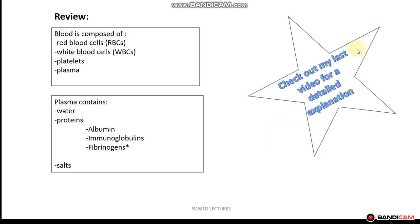Before I continue, I would like to do a quick review of blood composition as well as plasma composition. If you would like to see a more detailed explanation, please refer to my previous video — I will also provide the link below. So blood is composed of red blood cells, white blood cells, platelets, and plasma.